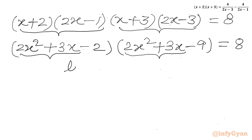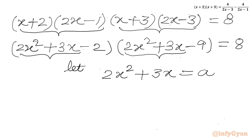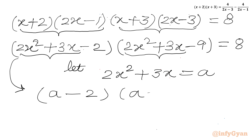So let us consider 2x² + 3x equal to a. So I can write our equation in terms of variable a: (a - 2)(a - 9) = 8.